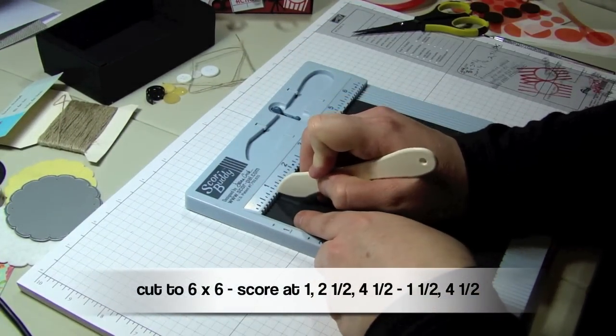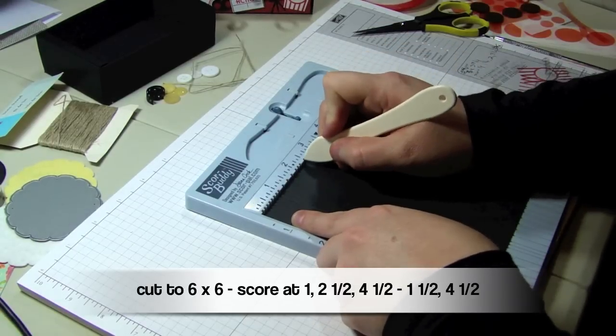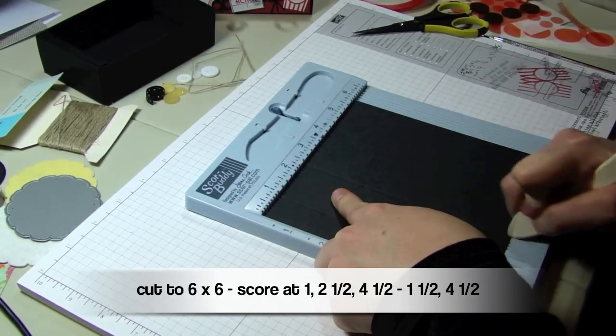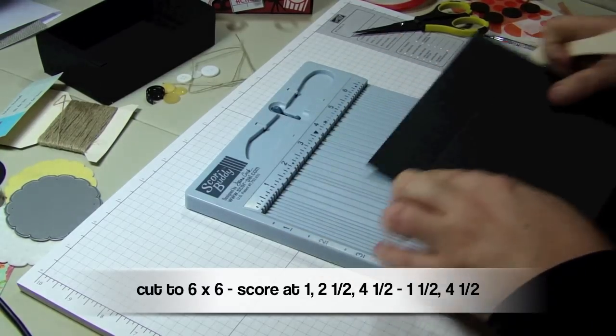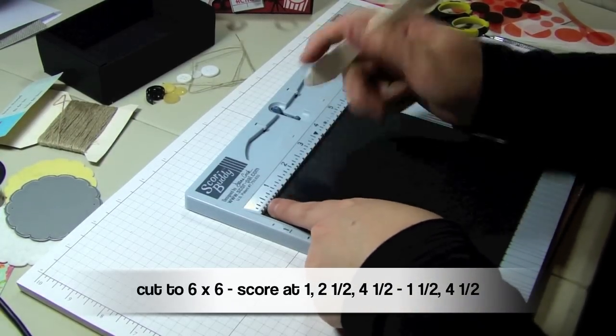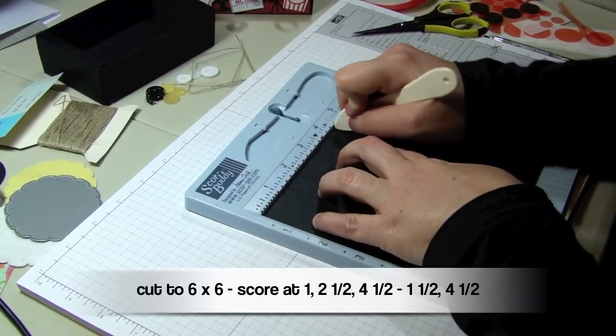Next up we're going to make the cup and candy box insert. You're going to cut your paper to 6 by 6 and score at 1 inch, 2 and a half inches, 4 and a half inches, and then you'll turn your paper and score at 1 and a half inches and 4 and a half inches.